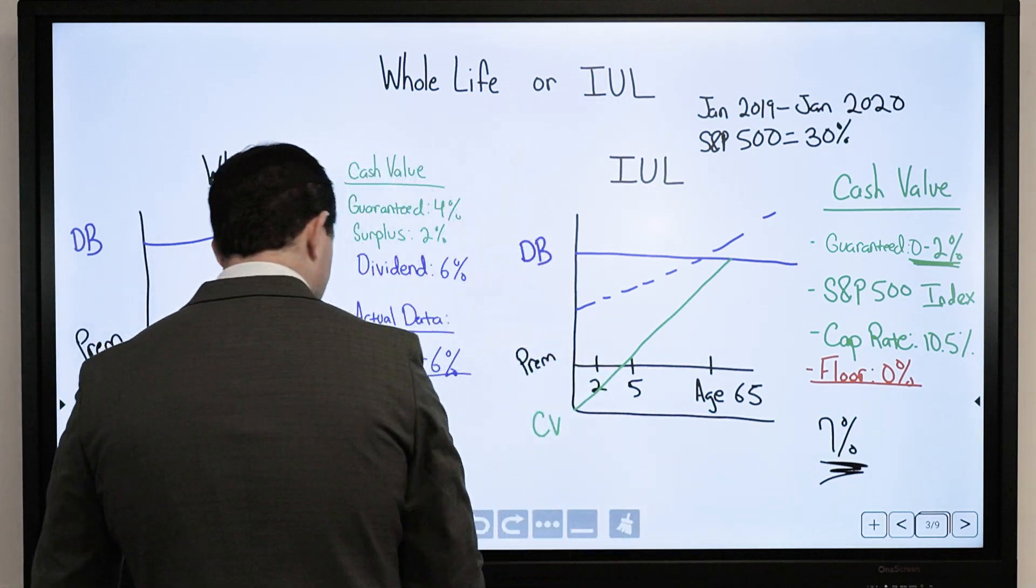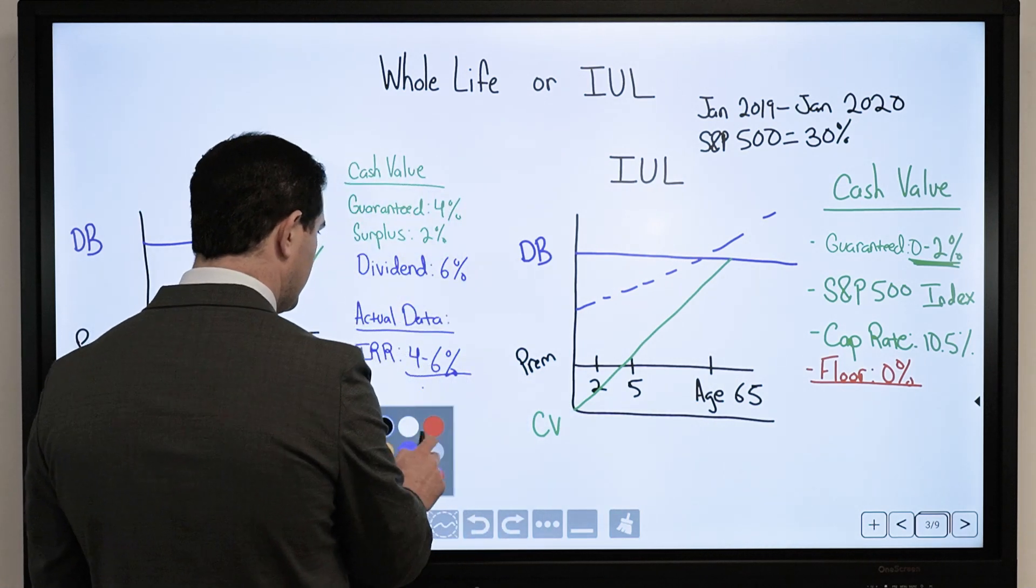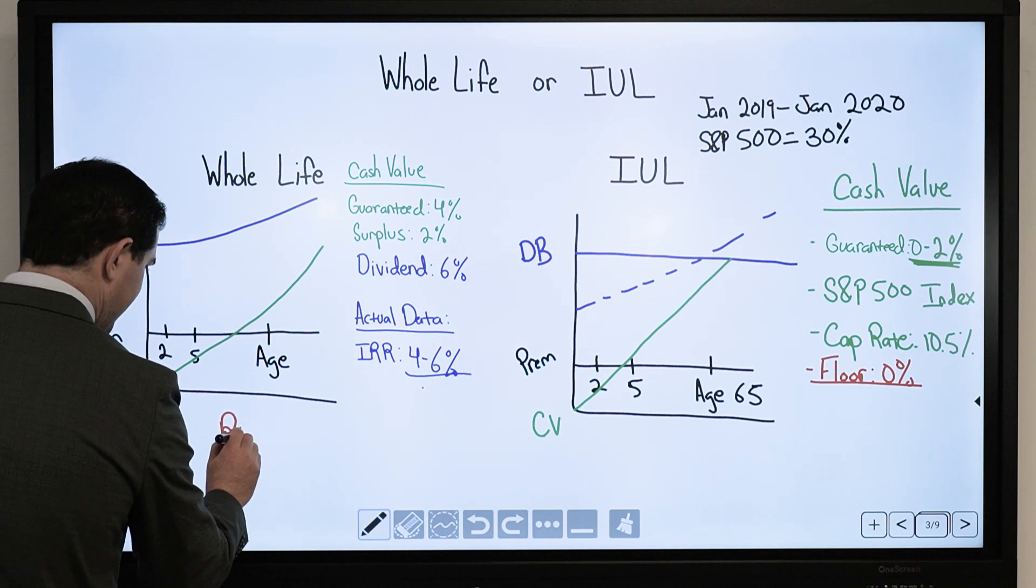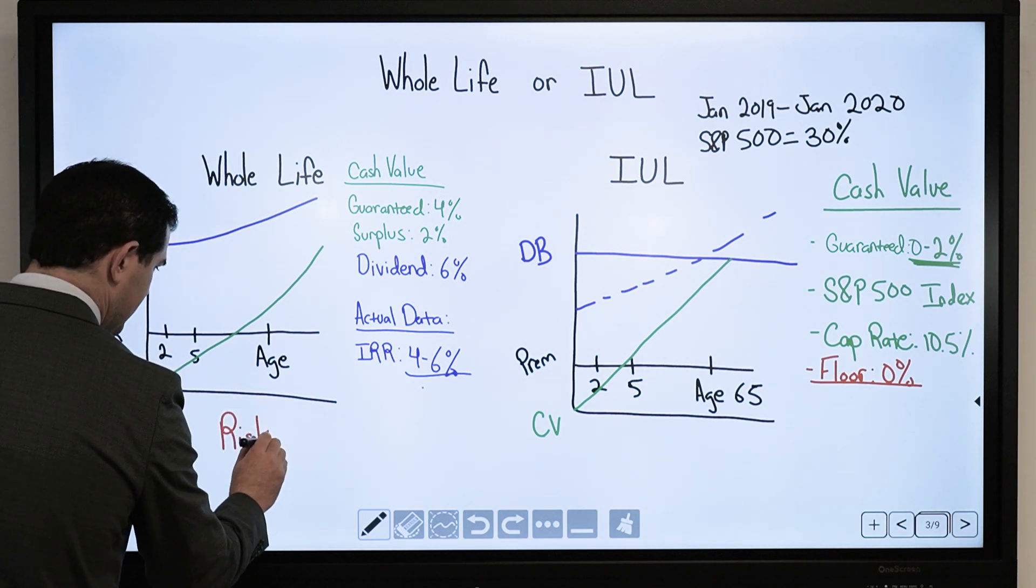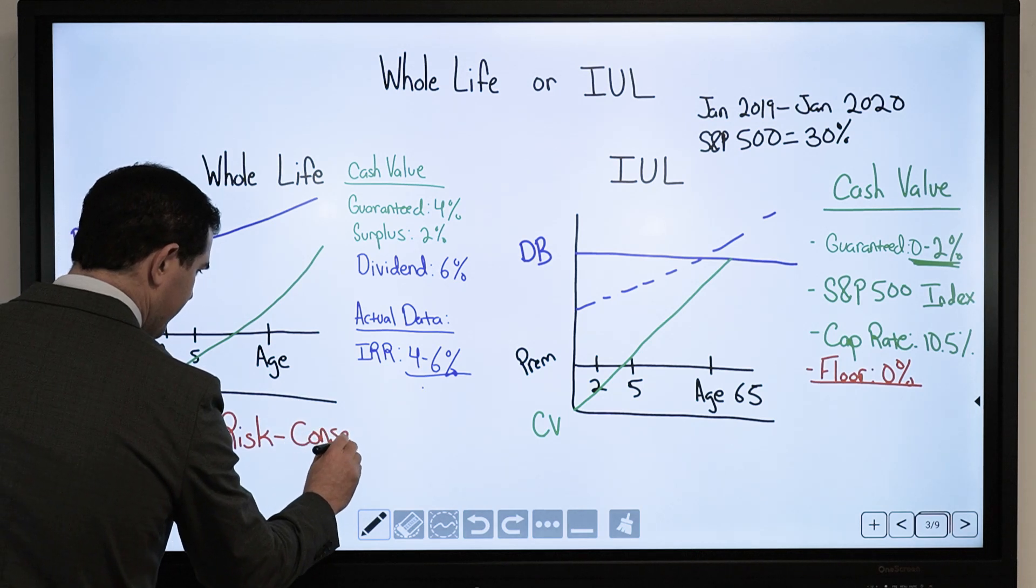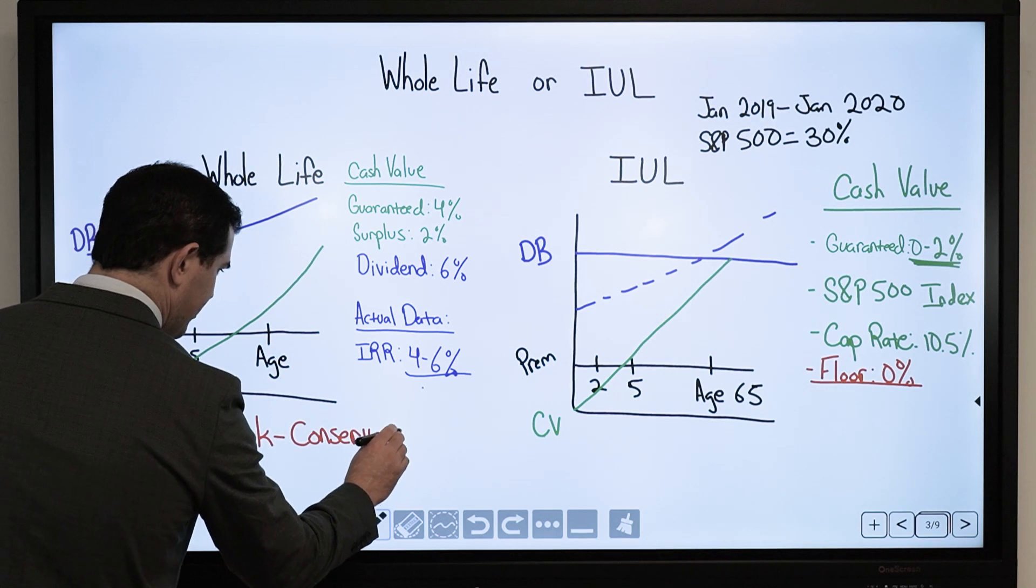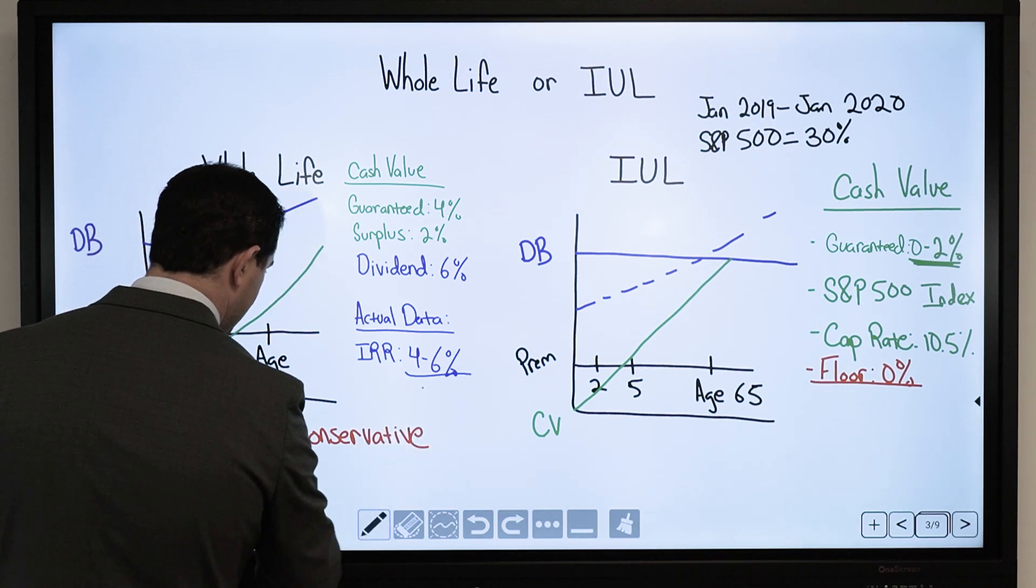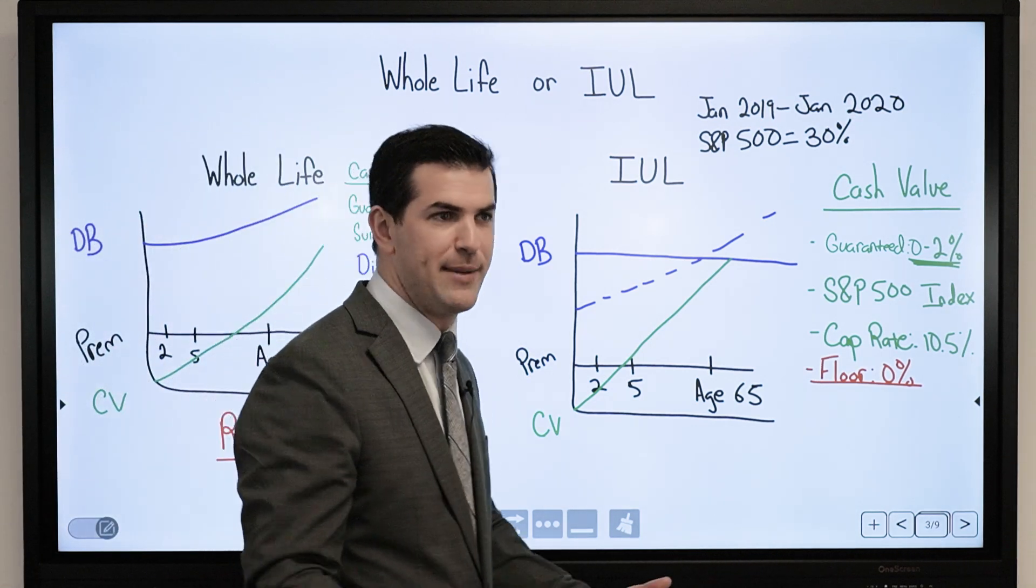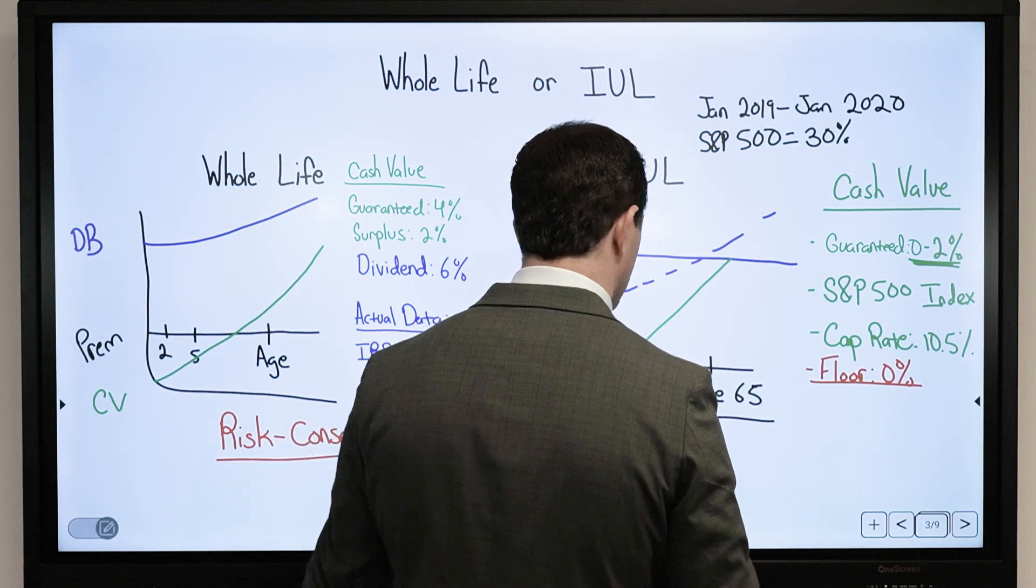The only drawback - if we look at the risks. The risk with whole life, there's no risk per se if it's set up properly. The risk is it's extremely conservative. When I look at the performance, that 3.5% to 5.5% kind of is what it is over the next 30 years. It's been consistent. I've got the historical proof.